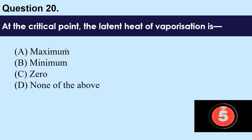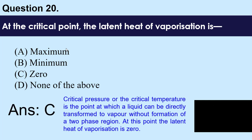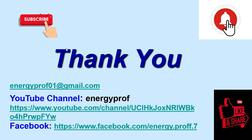Question number 20: At the critical point, the latent heat of vaporization is — A) maximum, B) minimum, C) zero, D) none of the above. The answer is C — zero. The critical pressure or critical temperature is the point at which a liquid can be directly transferred to vapor without formation of a two-phase region. At this point, the latent heat of vaporization is zero.